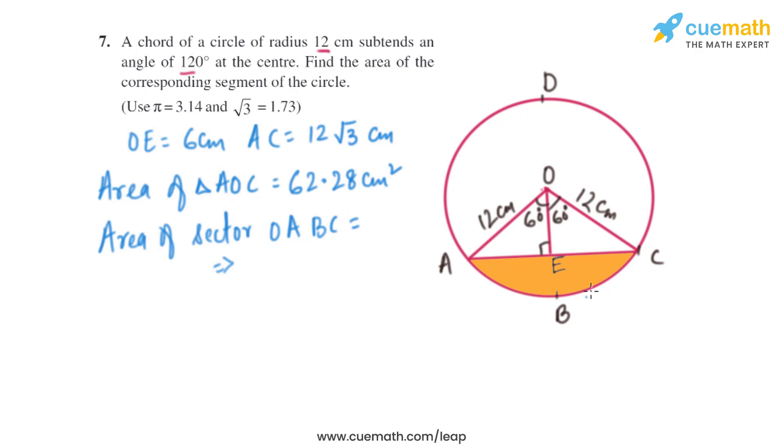Now let's find the area of sector OABC. The formula to find the area of sector is theta divided by 360 degrees multiplied by pi r square. The angle is 120 degrees, so it's 120 degrees divided by 360 degrees multiplied by 3.14 multiplied by 12 square.